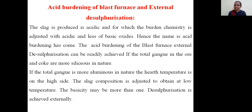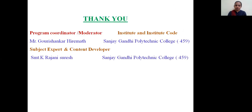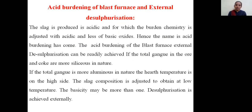The acid burdening of the blast furnace: external desulfurization can be readily achieved if the total gangue in the ore and coke are more siliceous in nature. If the total gangue is more aluminous in nature, the temperature is on the high side. The slag composition is adjusted to obtain a low temperature. The basicity may be more than one. Desulfurization is achieved.